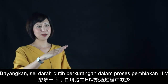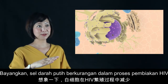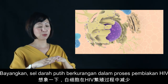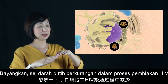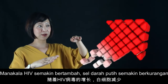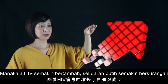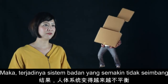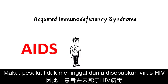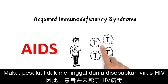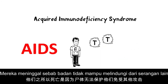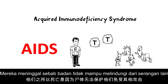Imagine we have fewer and fewer white blood cells, while HIV increases. The more HIV increases and the fewer white blood cells we have, we have a very imbalanced system. That is why most people with HIV don't die because of HIV itself — they die because of other diseases that attack the body, which can no longer fight back.